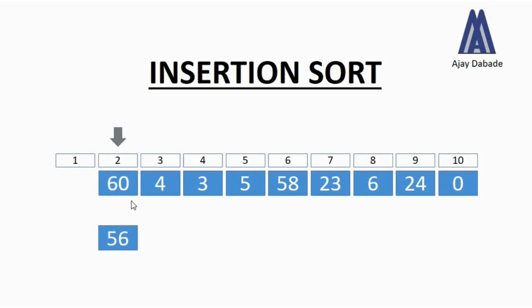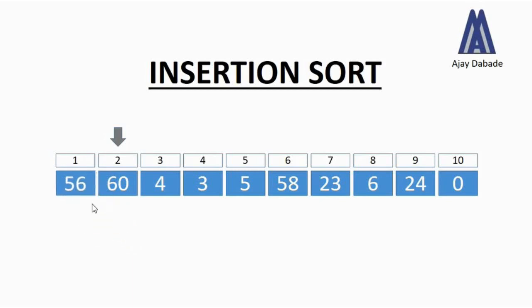We have shifted the number 60 one place towards the right and then we place 56 at position one. Be very clear — we are not swapping the numbers, we are shifting them. We are inserting the number 56 into its right position, which is why it is called insertion sort. Once we complete this exercise it will be very clear that we are not swapping numbers, we are shifting them.